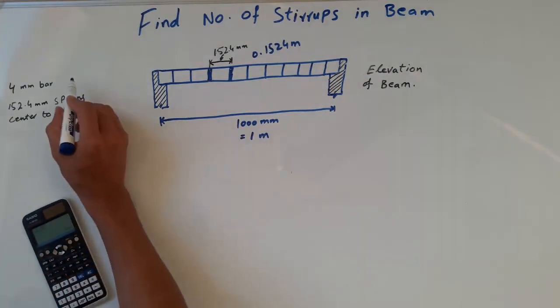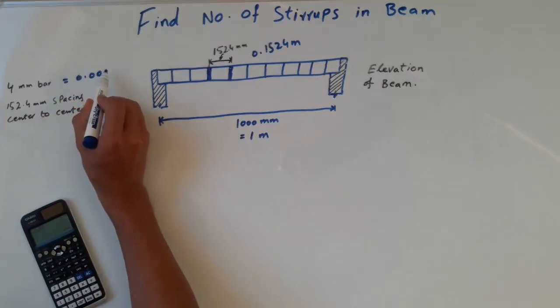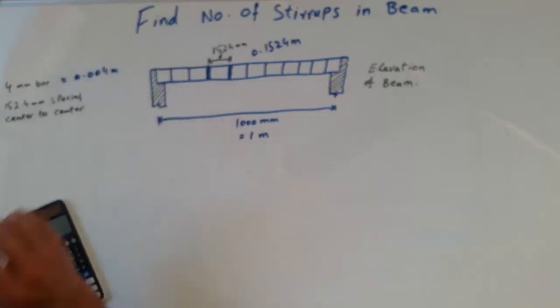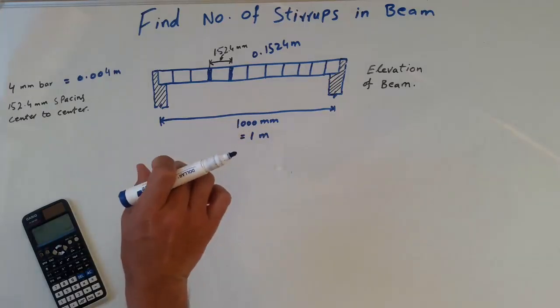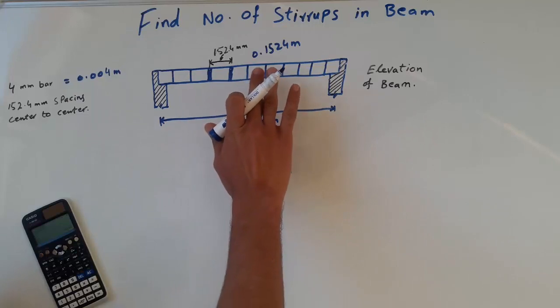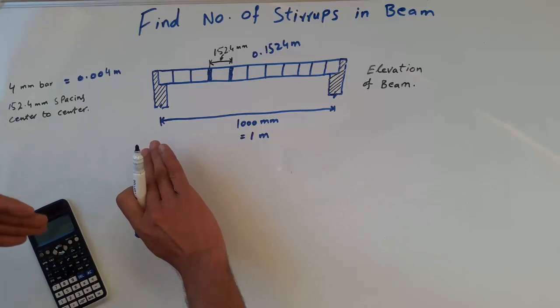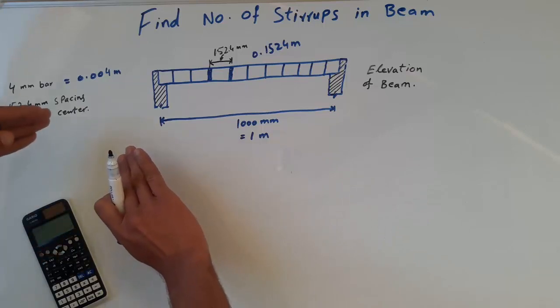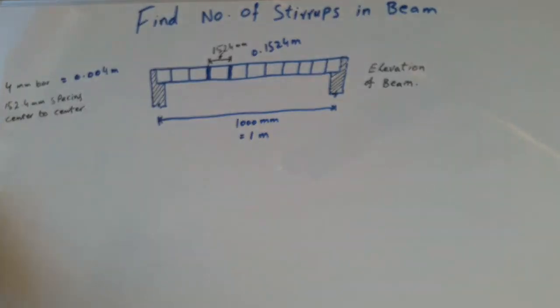So the length of the beam is 1 meter, spacing center to center is 0.1524 meters, and the bar diameter we use for the stirrups is 0.004 meters. This is the diameter of the bar. Now, how to calculate the number of stirrups?